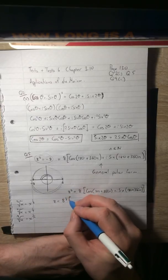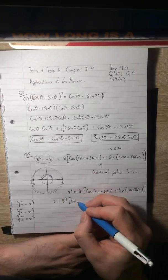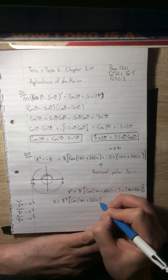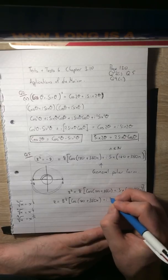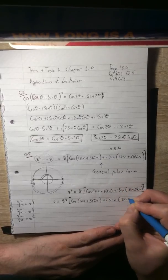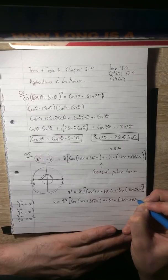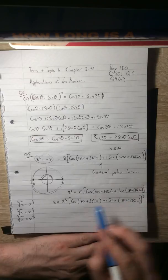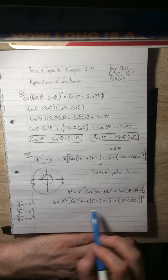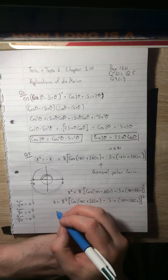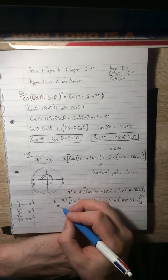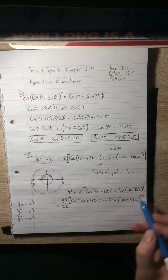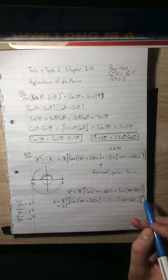So that's the cube root of 8 times cos(180 + 360n) + i sin(180 + 360n) to the power of 1/3. So that's taking cube roots on both sides. And what does that give us for z? Well, it gives us 8^(1/3) is 2.